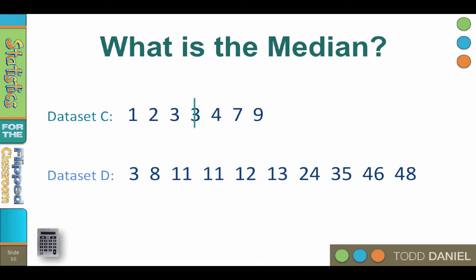But now look at data set D. As we count in, we find that the median is actually between 12 and 13. So we average those numbers, 12 plus 13 divided by 2, the median is 12.5.